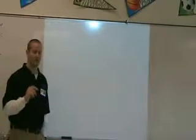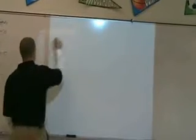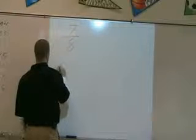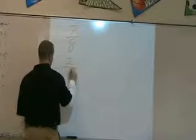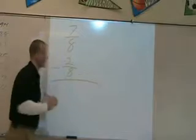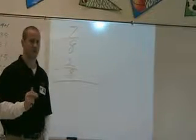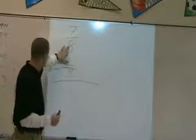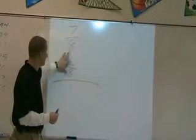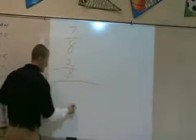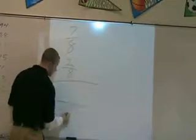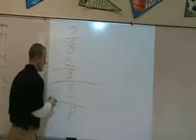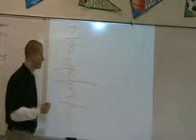Let's go over subtracting fractions. You have seven-eighths minus two-eighths. Adding and subtracting fractions both follow the same rule: you must do so with a common denominator. Both my bottom numbers are eight, so I can subtract now. Keep the denominator eight, then seven take away two gives five. So my answer is five-eighths.